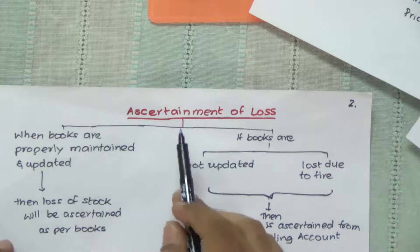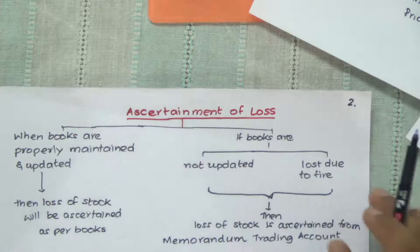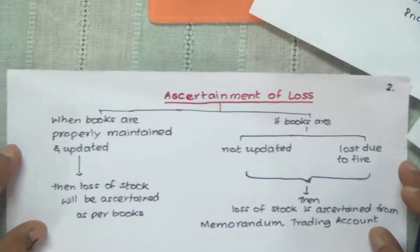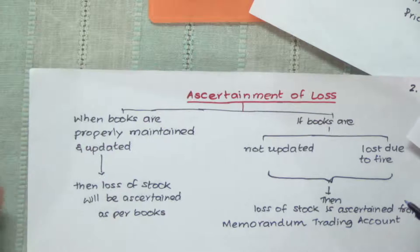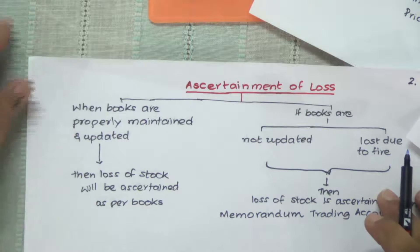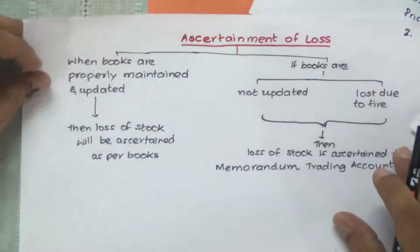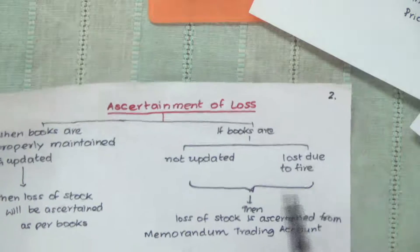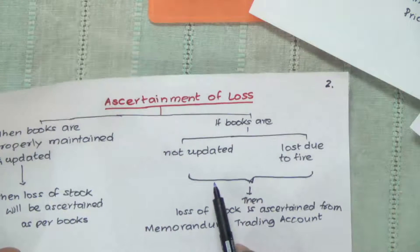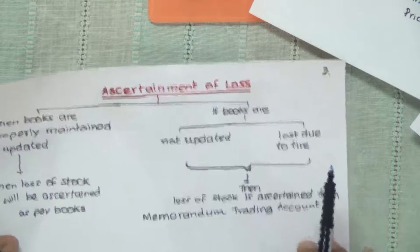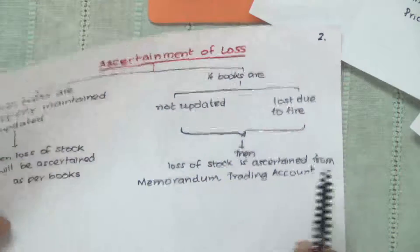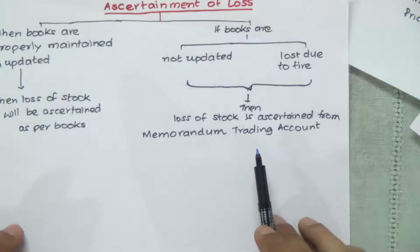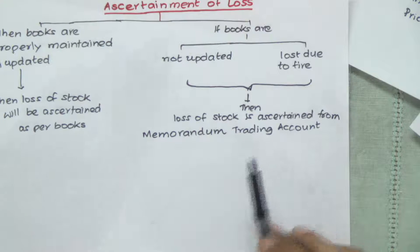We are focusing on ascertainment of loss. The ascertainment of loss can happen when the books are properly maintained and updated — then the loss of stock can be ascertained as per books. If the books are not updated or they are lost due to fire, then loss of stock is ascertained by preparation of a memorandum trading account.